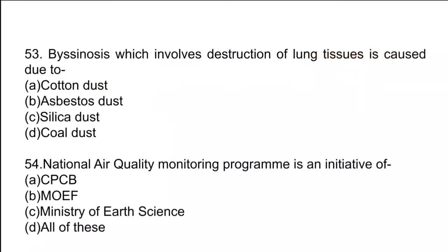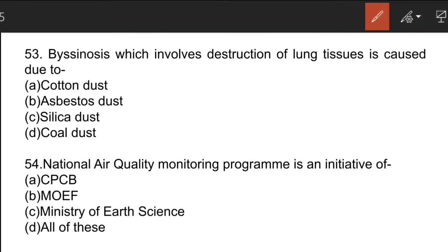The next question is about bissinosis. Bissinosis involves destruction of lung tissues and is caused due to cotton dust when it gets collected in the lungs; it can even cause cancer. When asbestos dust gets collected in the lungs, it is called asbestosis, which causes severe respiratory problems. Silica dust causes silicosis, which affects the respiratory tract, and coal dust is also known as black lung disease.